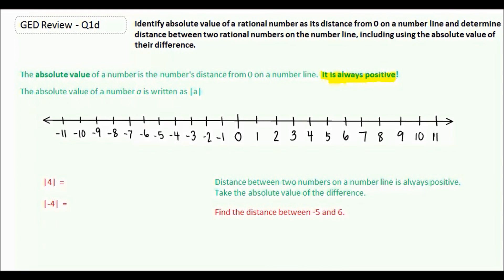The absolute value of a number, a, is written like so. We kind of have two little sticks on the outside of your number.